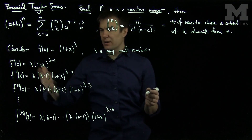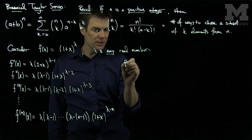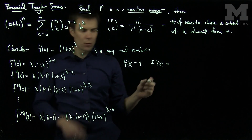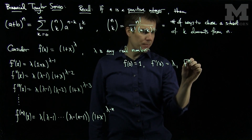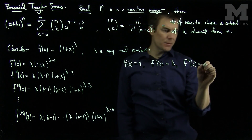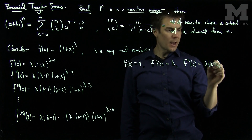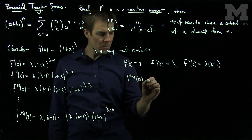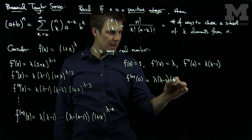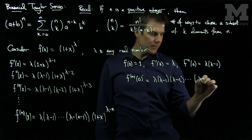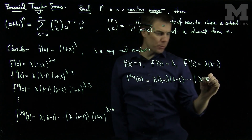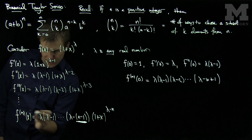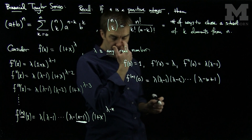When we plug in x = 0, we get: f(0) = 1, f′(0) = λ, f″(0) = λ(λ − 1), and in general f^(n)(0) = λ(λ − 1)(λ − 2)···(λ − (n−1)). It's important to remember that the last factor is (λ − (n−1)), corresponding to the nth derivative.